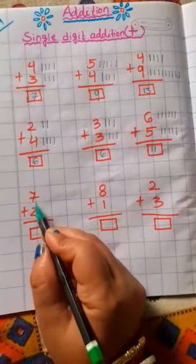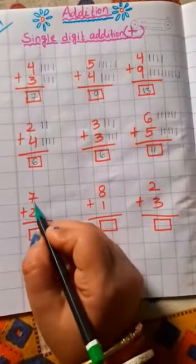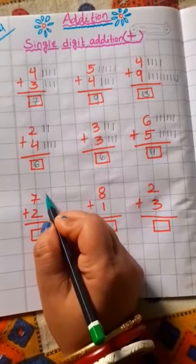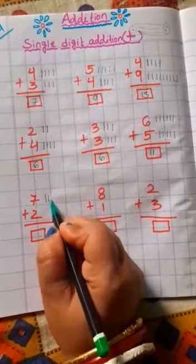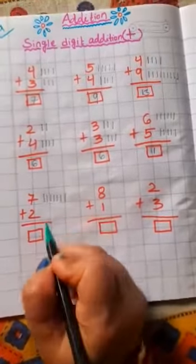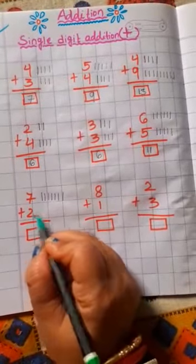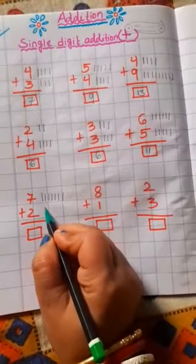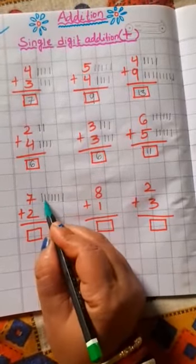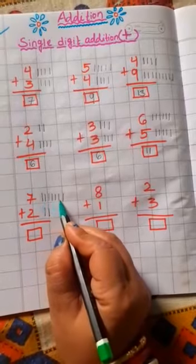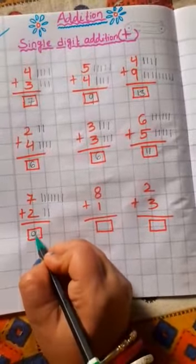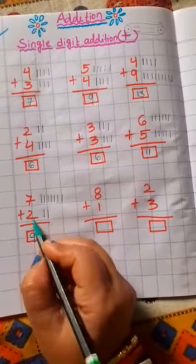Now next number. 7 plus 2. Which number is this? 7. Now you draw here how many lines? 7 lines. Very good: 1, 2, 3, 4, 5, 6, 7. Now which number is this? 2. You draw here 2 lines: 1, 2. Now count all the lines together: 1, 2, 3, 4, 5, 6, 7, 8, 9. Your answer is 9. 7 plus 2 is equal to 9.